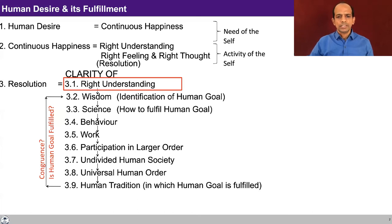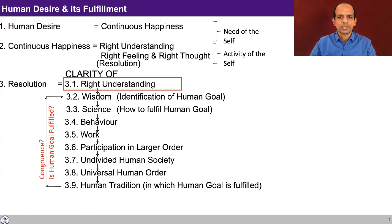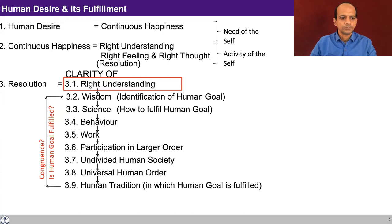Recapitulating what we had started discussing: the human desire is continuous happiness, which is the need of the self. And it is equated to right understanding, right feeling and right thought. This right understanding is something that we discussed, and right feeling and right thought based on right understanding is something that is called as resolution. When we look at the resolution, there are nine components of it and we have been discussing right understanding.